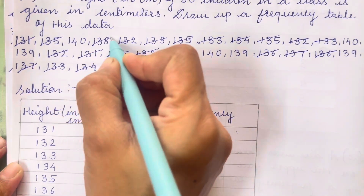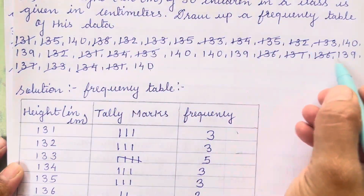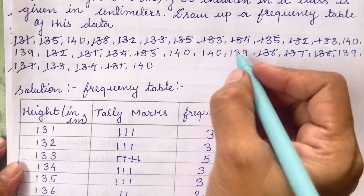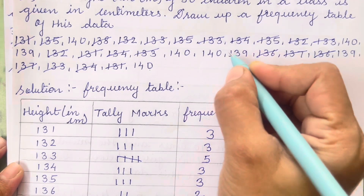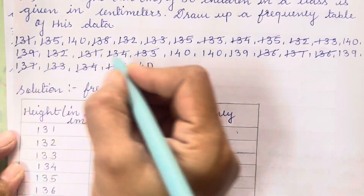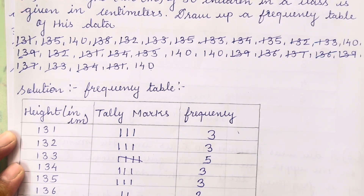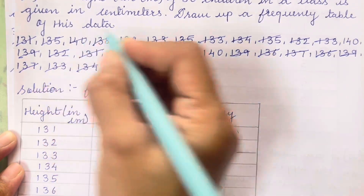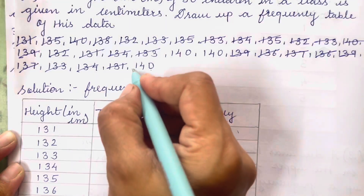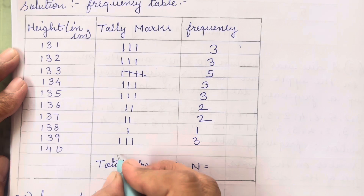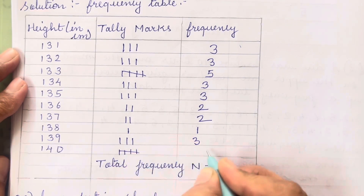For 138: only 1 — frequency is 1. For 139: 1, 2, and 3 — frequency is 3. For 140: 1, 2, 3, 4, 5 — frequency is 5.